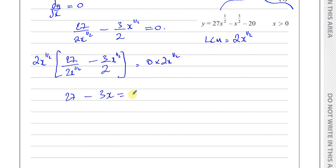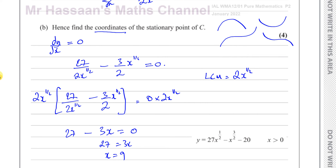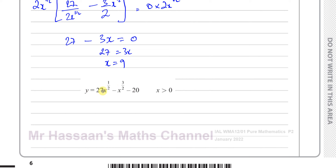Multiplying 0 by anything stays 0, so we have the simple equation 27 equals 3x. Therefore x equals 27 over 3, so x equals 9. That's the x-coordinate of the stationary point. Since they ask for coordinates, we also need the y-coordinate.